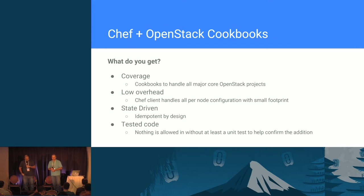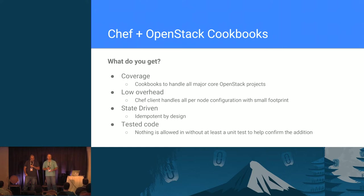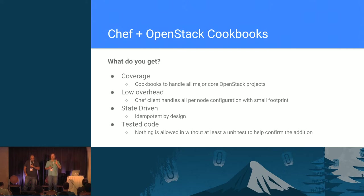Let me get into what you get with the current state of this project. This is part of the big tent — the core projects and everything outside the core are part of the big tent. The OpenStack Chef cookbooks are in the big tent. Coverage of the core projects was key: Nova, Glance, Cinder, Keystone, all the rest of them. The other part is keeping the overhead down on your nodes — these nodes are managed via Chef client, which is an agent that runs on the nodes.